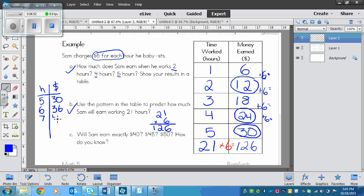So will he earn $40? Nope. 8 hours, 42 plus 6 is $48. So no, he will not earn $45. And 9 hours, 48 plus 6 would be $54. So he will not earn exactly any of those, right? We've got 30, 36, 42, 48, 54. So we would write no.